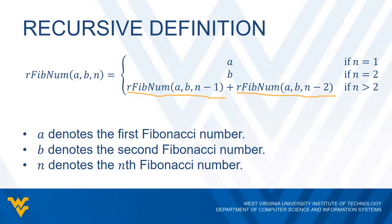For example, if N is three, that means we need to get the first Fibonacci number and the second Fibonacci number and add them together.